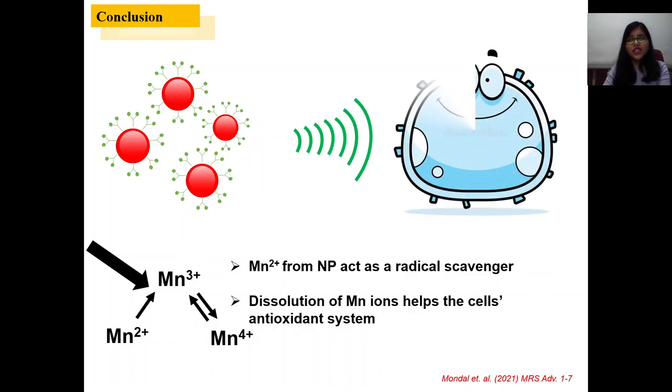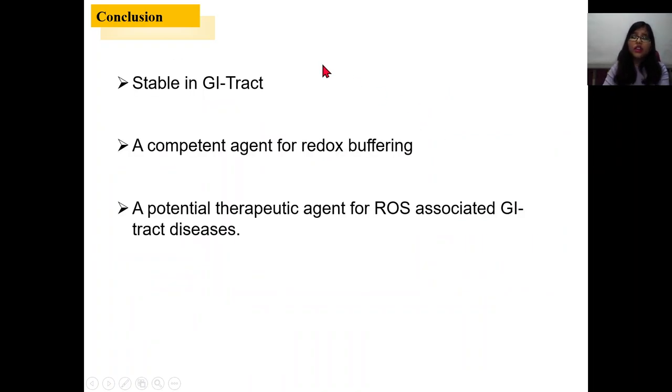So the cell stays at oxidative eustress. So what is the conclusion in one line? This material is stable in GI tract, is a competent agent for redox buffering and a potential therapeutic agent for ROS associated GI tract diseases.